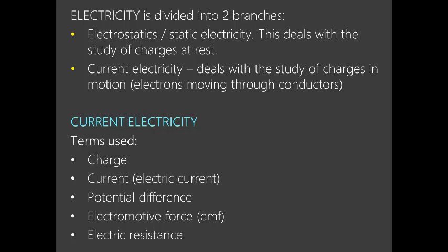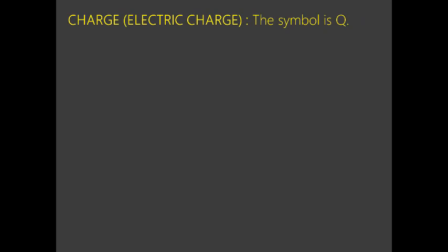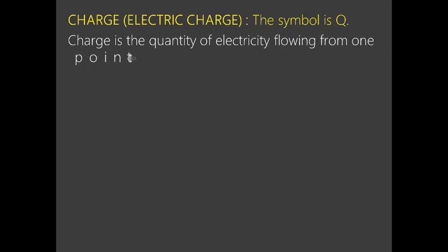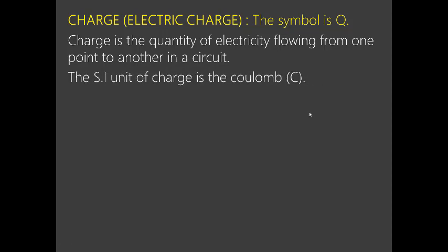What is an electric charge? The symbol for charge is Q. Charge is a quantity of electricity flowing from one point to another in a circuit. The SI unit of charge is the coulomb, abbreviated by capital C. We shall later find out the definition of a coulomb.